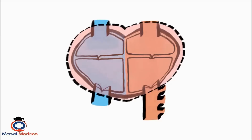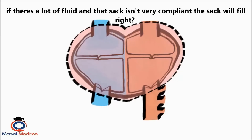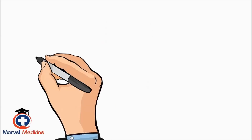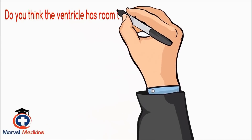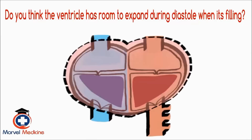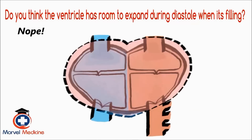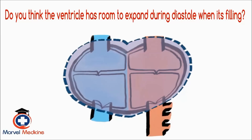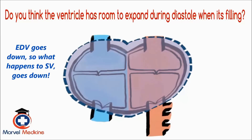Imagine fluid surrounding the heart in this sac. If there's a lot of fluid and that sac isn't very compliant, the sac will fill. Now, if that sac is filled, do you think the ventricle has room to expand during diastole when it's filling? Nope. The amount of room it has to expand and fill reduces. So what do you think it does to the end diastolic volume? Goes down. So what happens to stroke volume? Goes down.